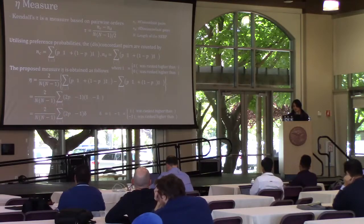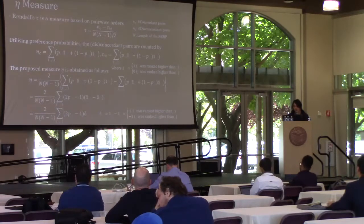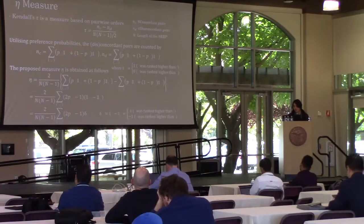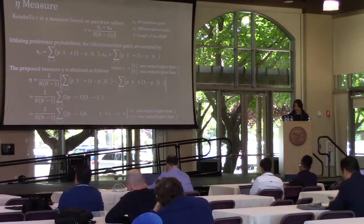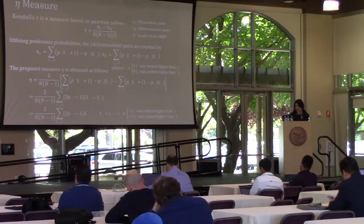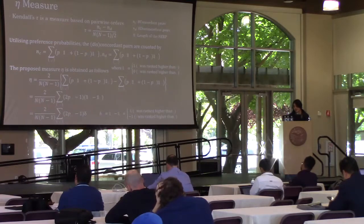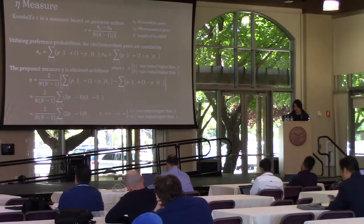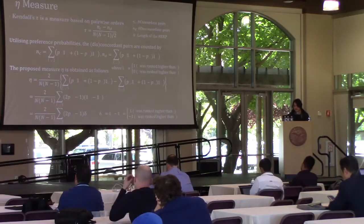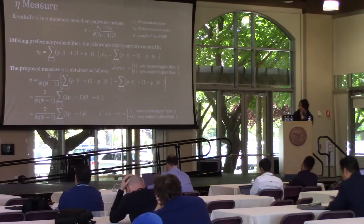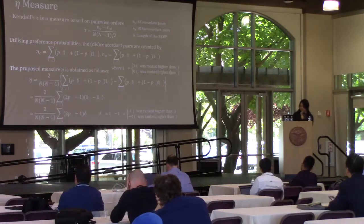Then, by substituting the soft-counted number of concordant and discordant pairs for nc and nd in Kendall's tau, we can get the eta measure. Delta ij is the difference of the indicator function, so delta ij is a value of 1 when i is ranked higher than j, otherwise minus 1.